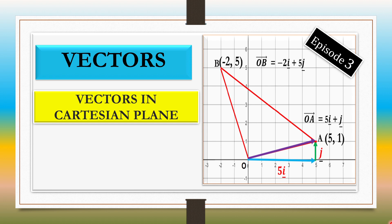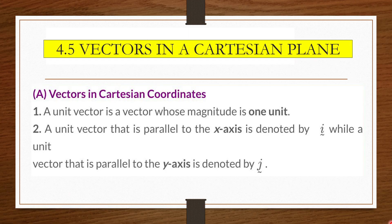Welcome to my channel. In this video you will learn about vectors in a Cartesian plane. A unit vector is a vector whose magnitude is 1 unit.